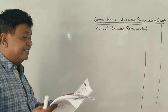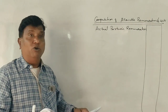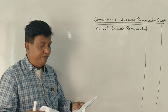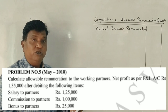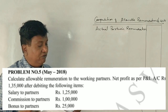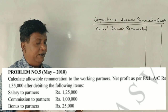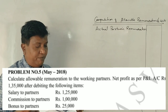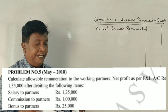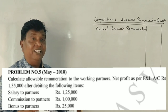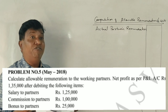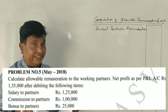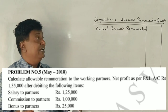This is the 2018 exam question. In 2018, calculate allowable remuneration to the working partners. Net profit as per profit and loss account is ₹1,35,000 after debiting the following cases.